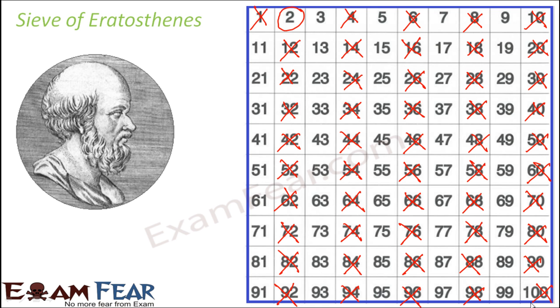So we have crossed all even numbers which are composite. Now the next number that we encountered is 3, which is again a prime number.